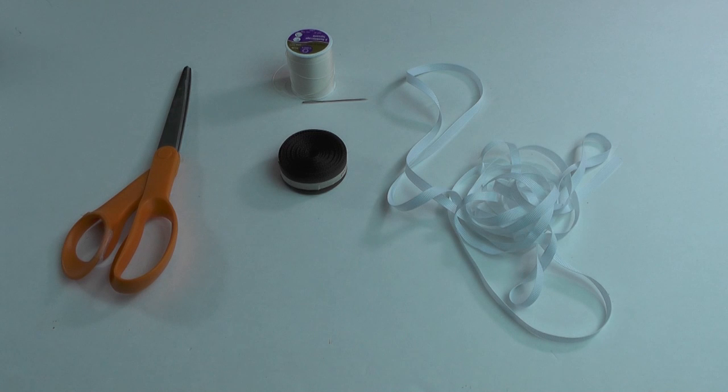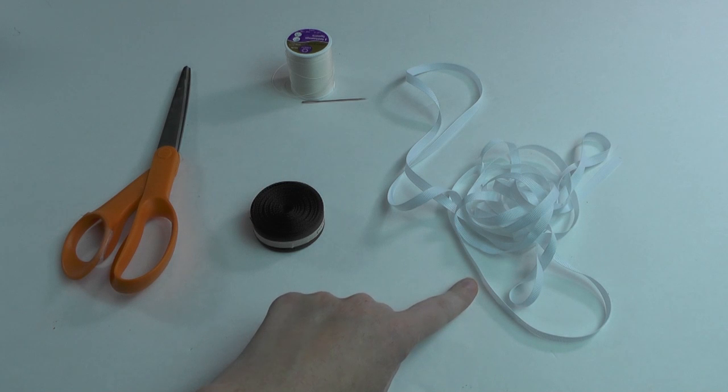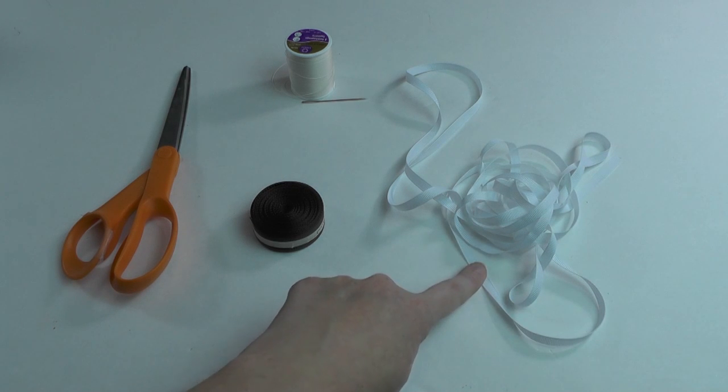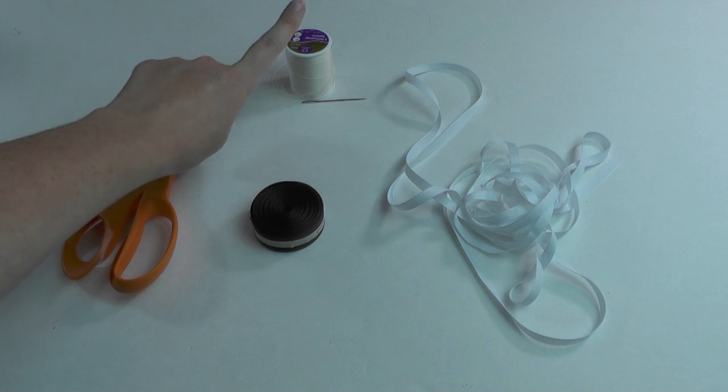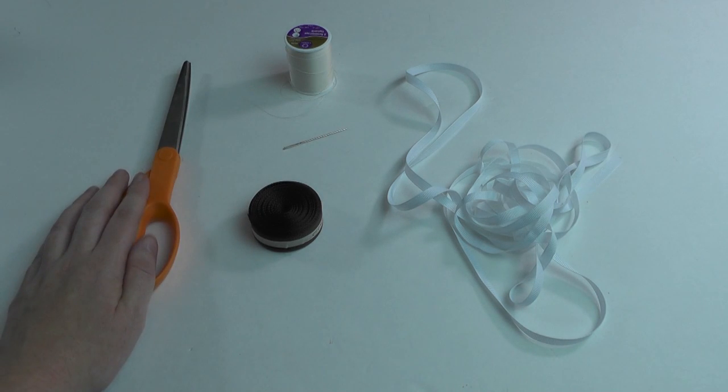Okay guys, for this tutorial I am using 5 1/8 inch brown grosgrain ribbon, 1/4 inch white grosgrain ribbon, upholstery thread, a long needle, and of course your scissors.